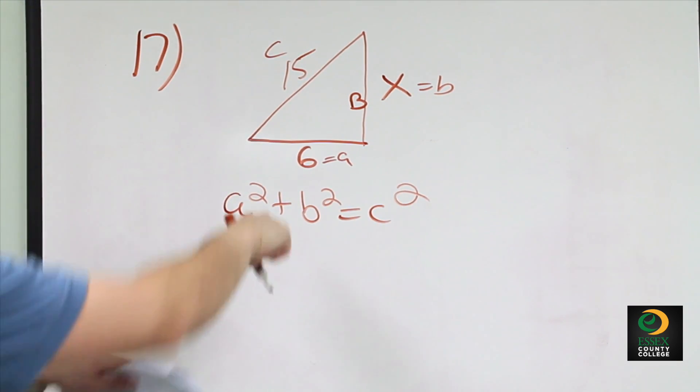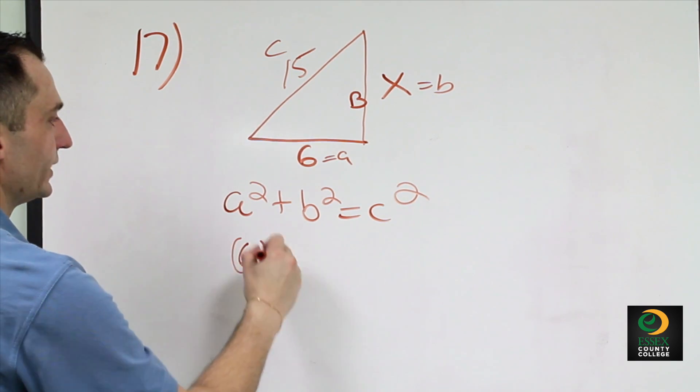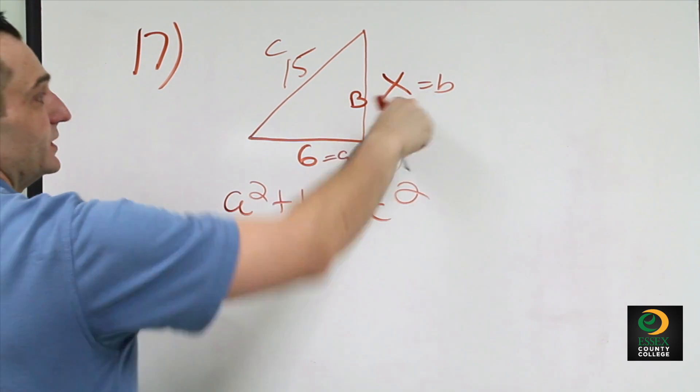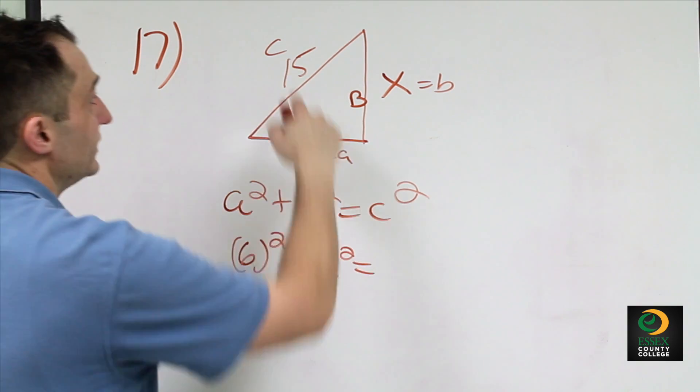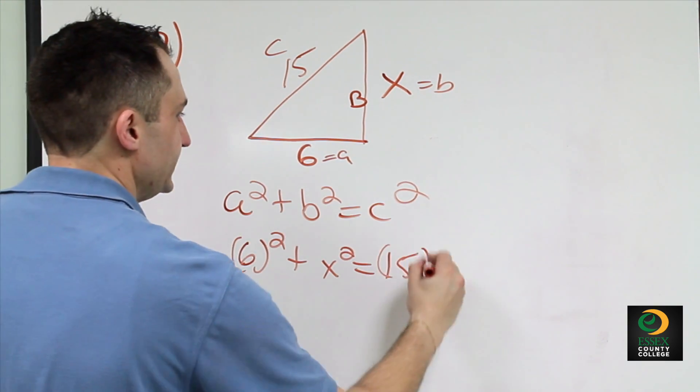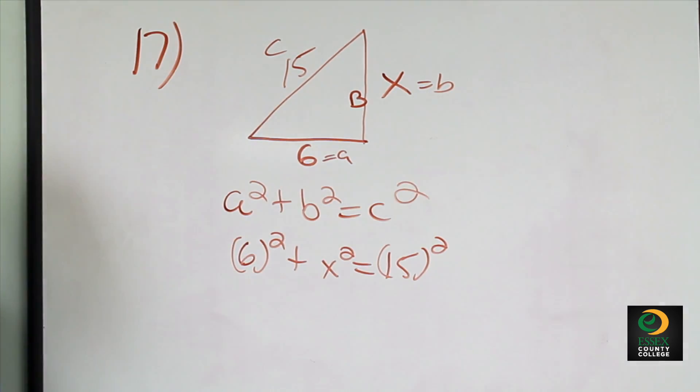So a squared is simply 6 squared plus x squared is equal to 15 squared. We're just substituting them in basically.